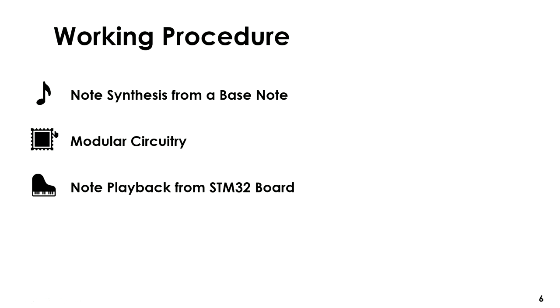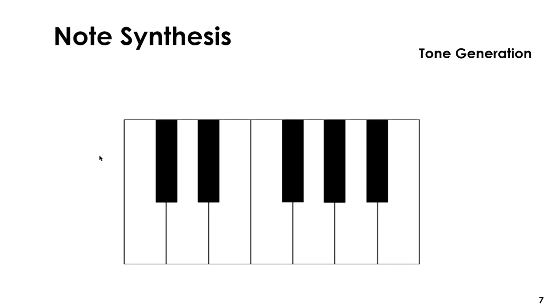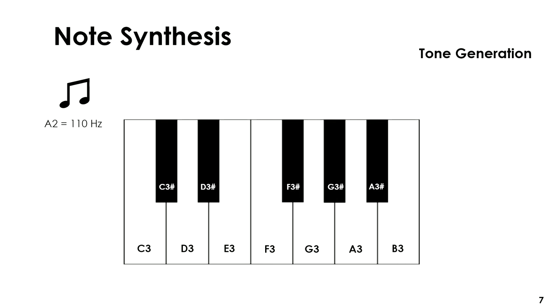We will now discuss an overview of the working principle of our digital piano. The first step is audio synthesis. Each octave in the piano has 12 notes as shown. The most basic scale starts from the C note. Our task was to take one of these notes as our fundamental sample and generate other piano notes of different frequencies by resampling.